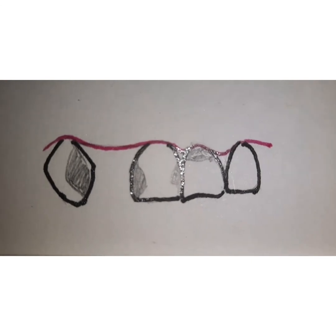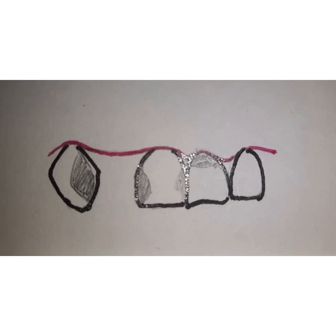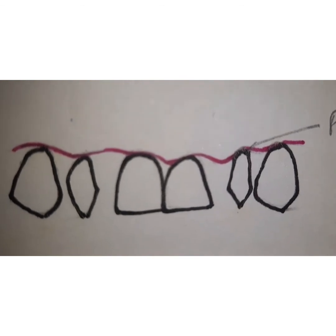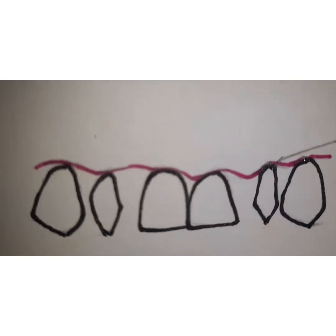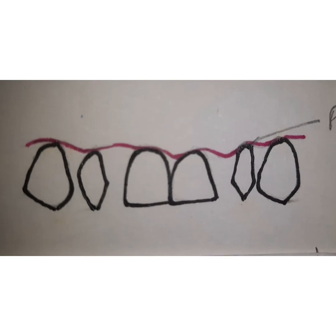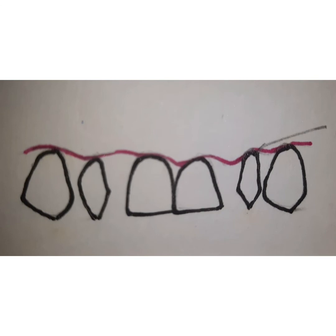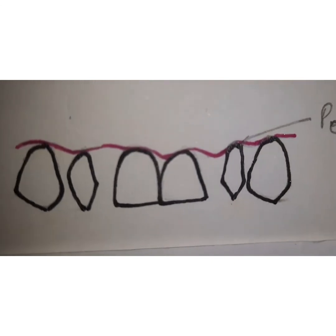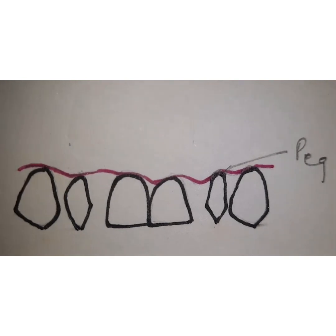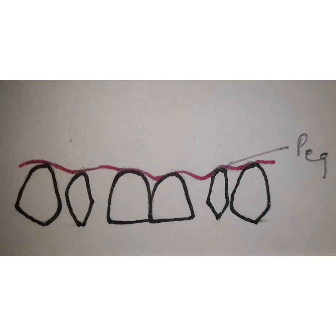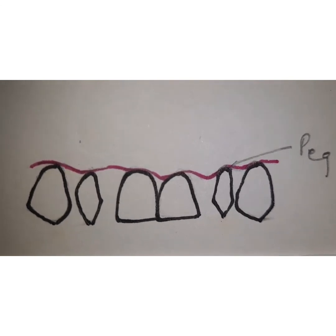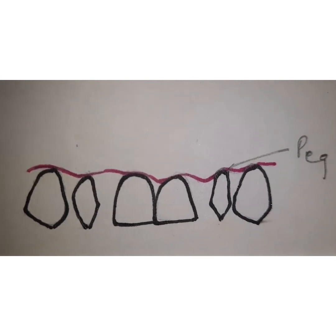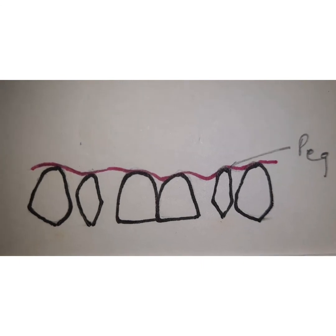For younger patients, extracoronal retainers should be avoided because pulp horns are higher and such retainers will cause post-operative sensitivity leading to treatment failure. The morphology of the crown of the abutment tooth also determines retainer selection — for example, peg-shaped laterals, as seen in the figure, are better treated with extracoronal retainers which alter tooth morphology and provide better aesthetics. These are all the factors for selecting extracoronal, intracoronal, or radicular retainers; individual types will be discussed separately.